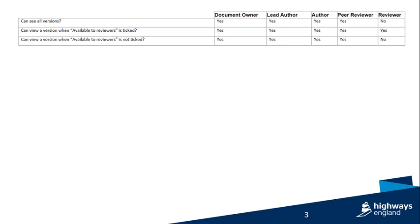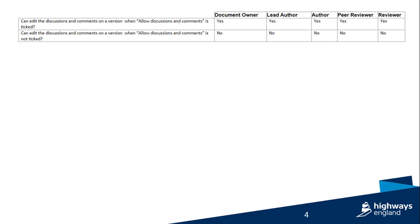A Document Owner, Lead Author, Author, and Peer Reviewer can see all versions, whereas a Reviewer can only see the versions where Available to Reviewers is ticked. They cannot see versions if Available to Reviewers is not ticked. If the tick box Allow Discussions and Comments is ticked, all users can add discussions and comments to a version. If it is not ticked, no users can add discussions or comments to the version.